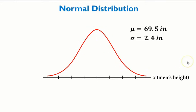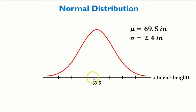The middle of the bell shape is the mean. We have an axis down here representing men's height. To the right of the mean are the larger or higher values, and to the left of the mean we have the shorter men or shorter heights.